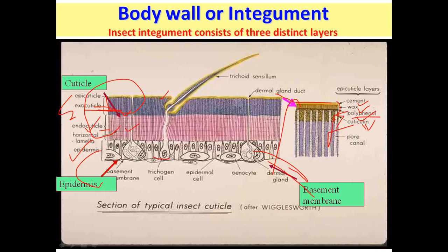Enzymes involved in the production and digestion of the cuticle are also present in the epidermal layer. During molting, the epidermal layer differentiates into dermal gland cells — which secrete the cement layer — and trichogen cells, which produce hair-like outgrowths on the cuticle called trichomes. Molting glands secrete the molting fluid, which helps digest the old cuticle.